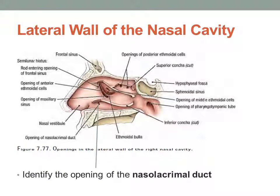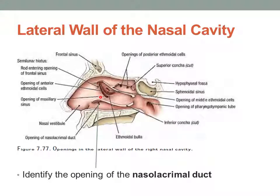To get deeper into the lateral wall of the nasal cavity, we're going to take scissors and remove the middle nasal concha. Then we should be able to identify within the middle meatus a curved slit called the semilunar hiatus or hiatus semilunaris — figure 777 in your dissector. This is quite interesting because within it you will find the opening to the frontal sinus, opening to anterior ethmoidal air cells, and the opening to the maxillary sinus. Posterior to it, you will find the ethmoidal bulla or bulla ethmoidalis.